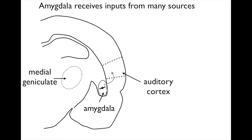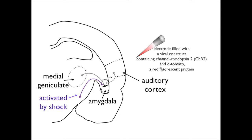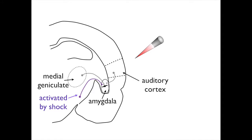The first are the auditory inputs from the auditory cortex and from the medial geniculate, the auditory thalamus. The second are inputs activated by foot shock. The investigators are going to transfect the auditory inputs to the amygdala with channel rhodopsin 2, accomplished with electrodes filled with a viral construct containing the genes for channel rhodopsin 2 and tomato, injected into the auditory cortex and medial geniculate.